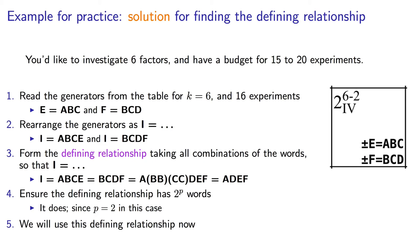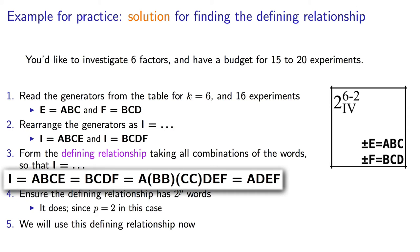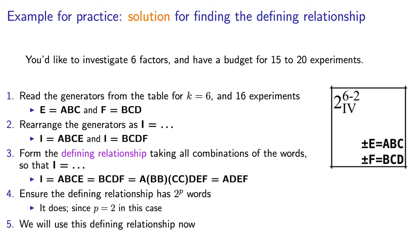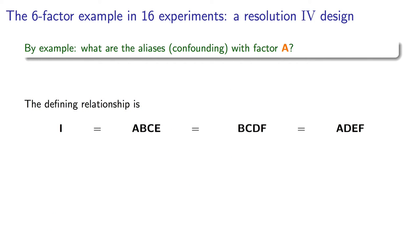But before we do that, in the prior video, did you try the example where I'd asked you to look at 16 experiments using 6 factors? If you did, you would have recalled that the defining relationship there was I equals ABCE equals BCDF equals ADEF. Let's quickly go check what factor A, the main effect, is aliased with.